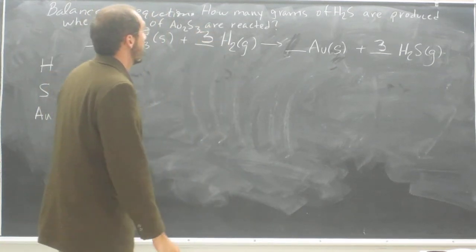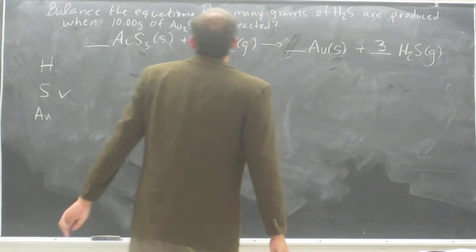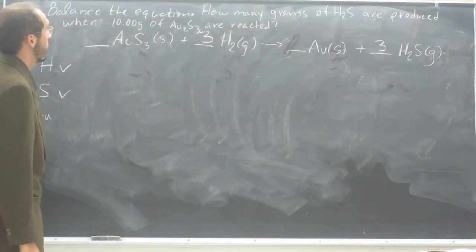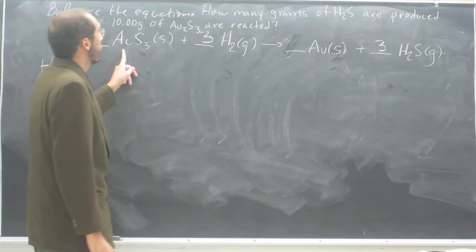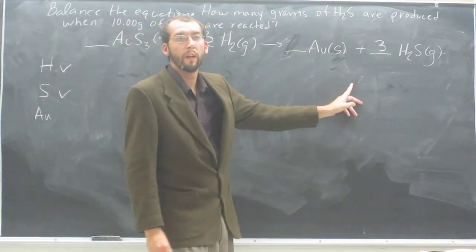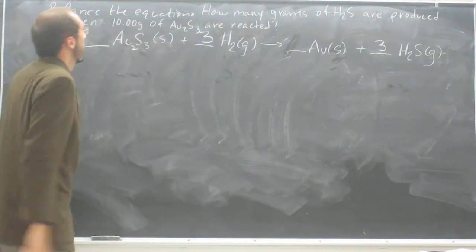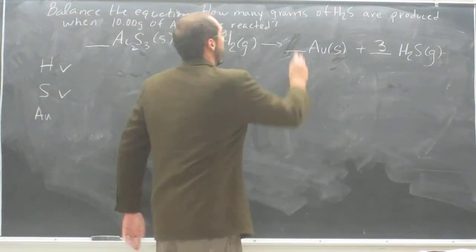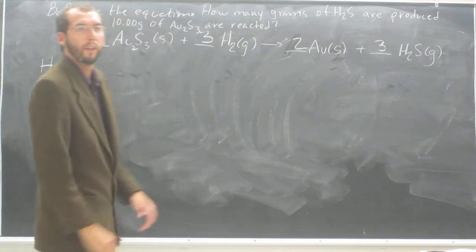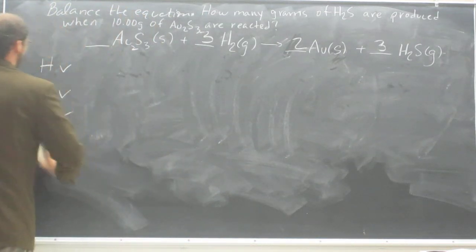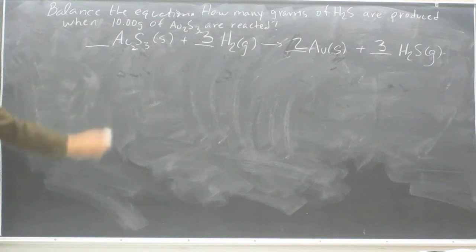So three times two is six, three times two is six. Hydrogen is balanced, sulfur is balanced now. And gold, we have one over here and one over there. It's supposed to be two. Oh, it is supposed to be two. Okay, so we've got two over here, one over there, two. Okay? So now gold. Okay? So that's the first part of that problem.